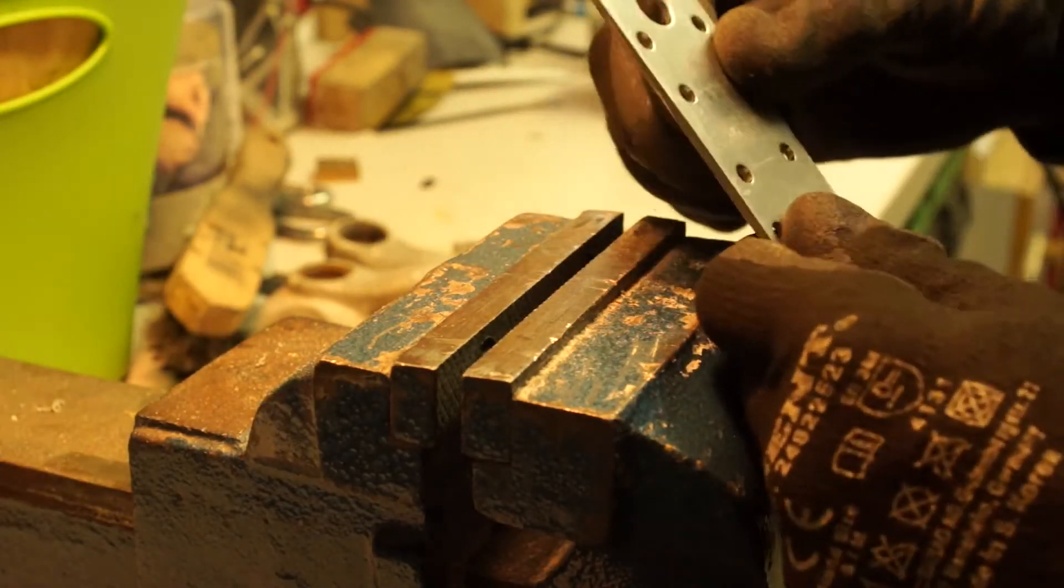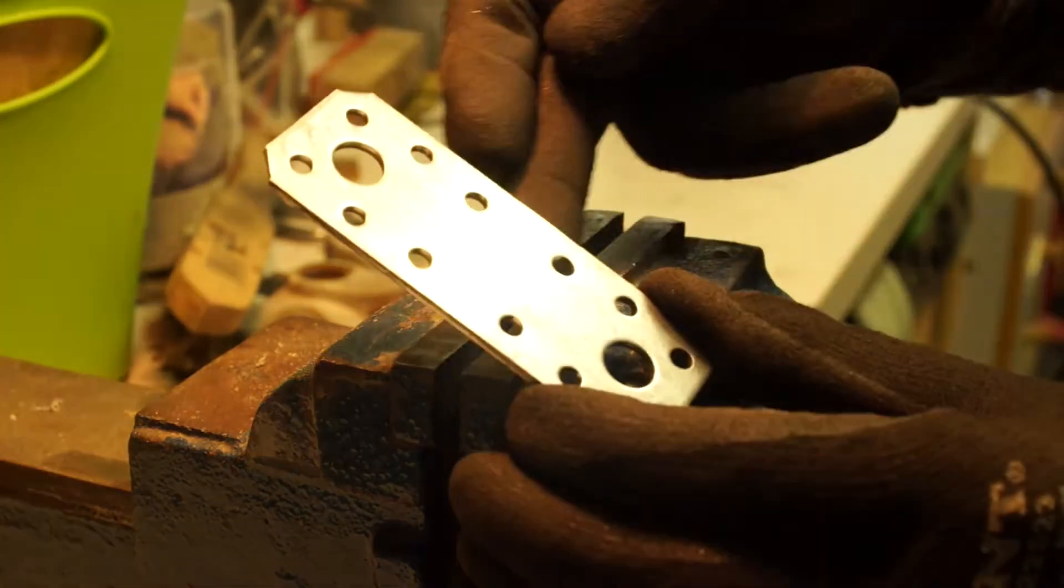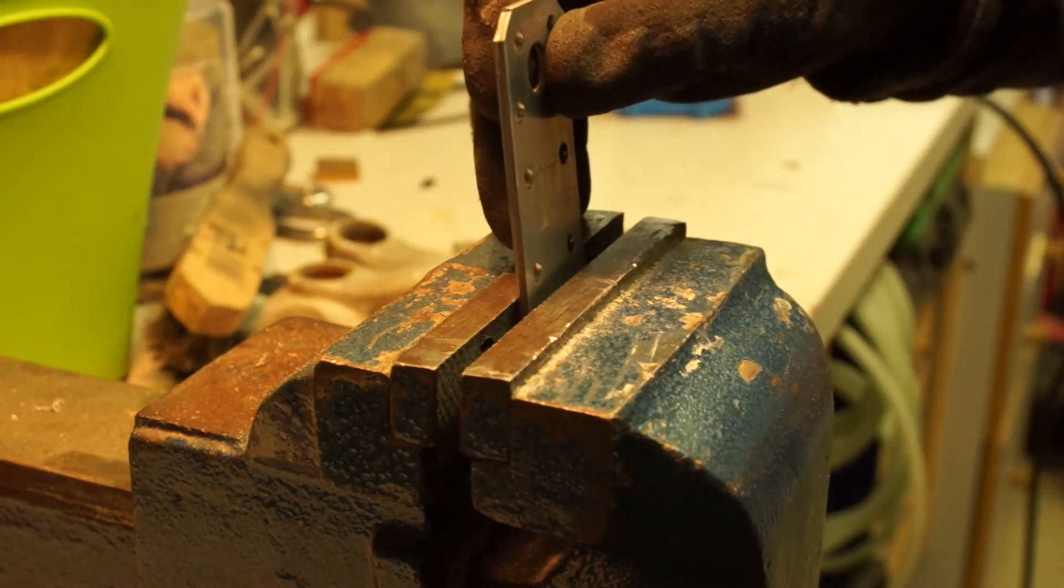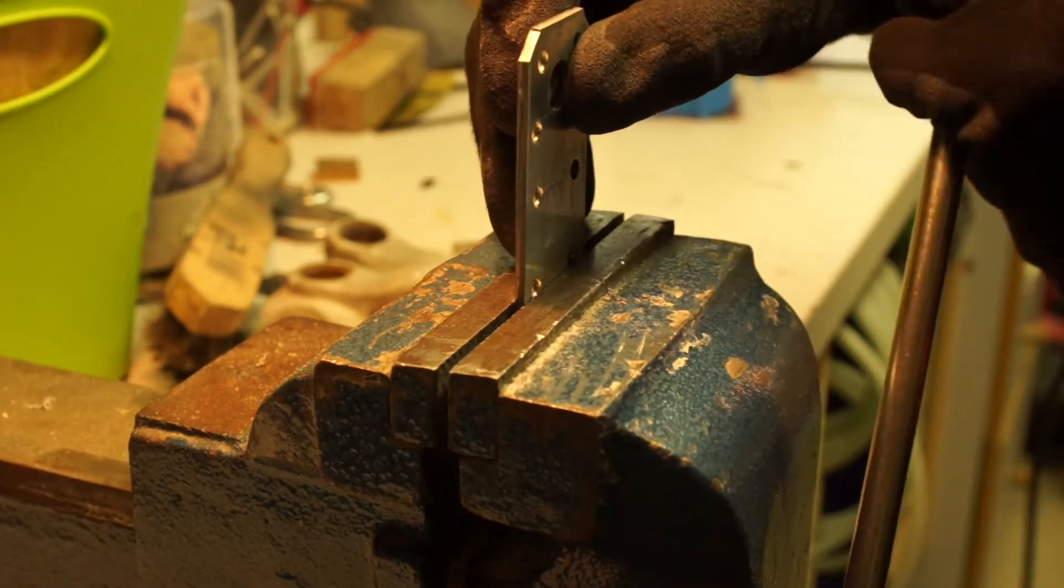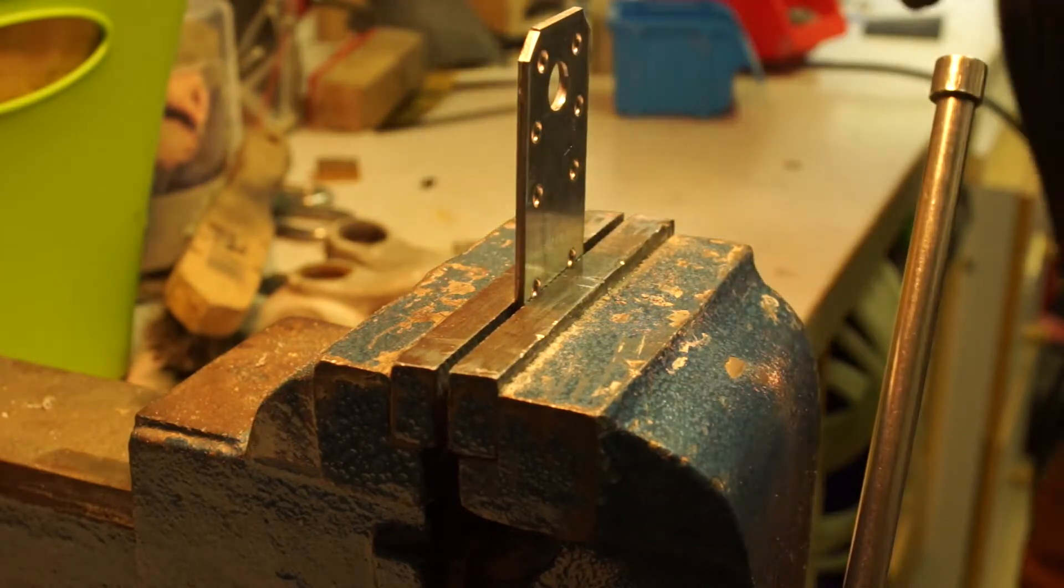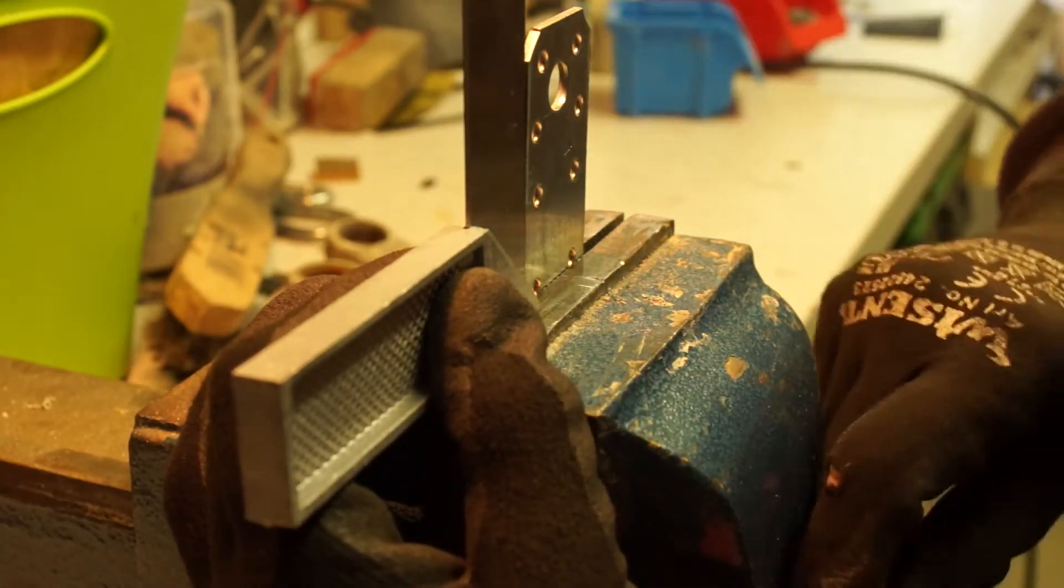To bend the metal plates, we will place them right here and we will have the line of this here exactly at the two holes so we can bend easily here. Be sure that you have a right angle. Yeah, looks good.